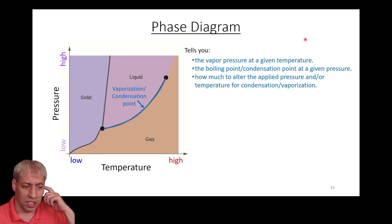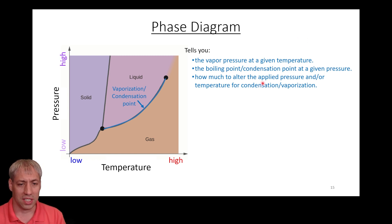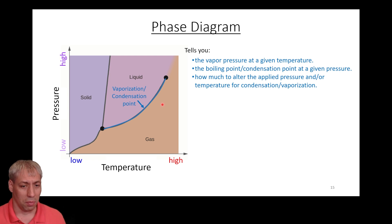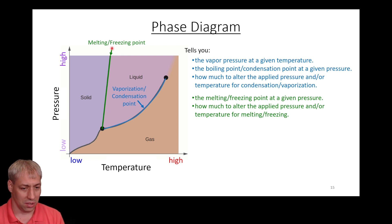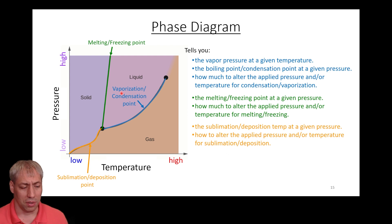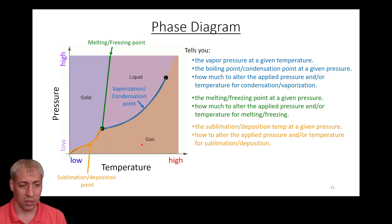The vaporization-condensation point is also the boiling point if you know the external pressure of the system. To find vapor pressure at a given temperature, go up, find that line — that's the threshold, that's the vapor pressure. The diagram also shows the melting-freezing point, how to apply pressure or change temperature to get a transition, and the sublimation-deposition point where you can transition between gas and solid by increasing pressure or temperature. All of that information is embedded in this graph.